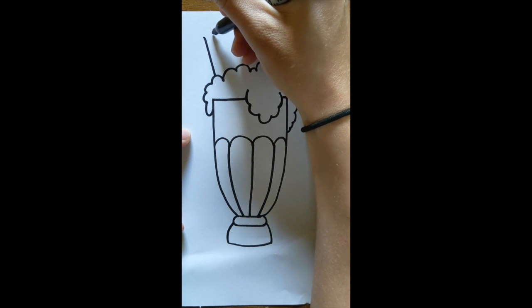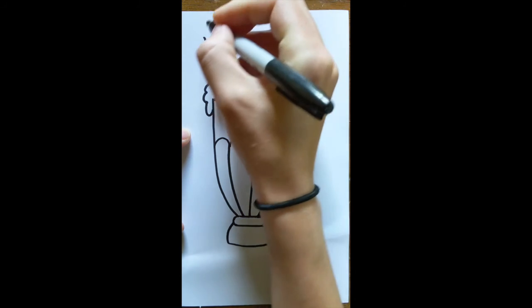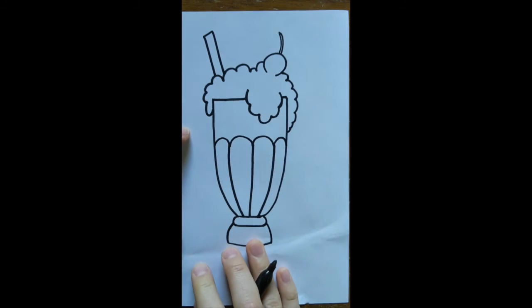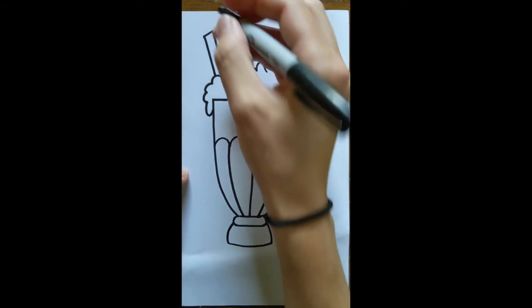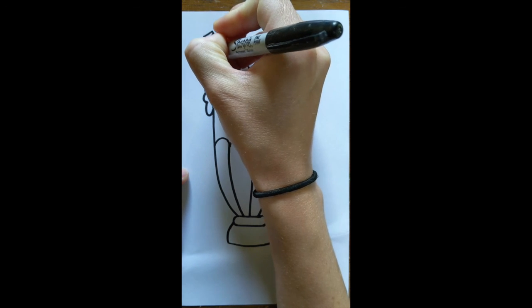Once you have that, you can add some details on your straw. I'm just going to add lines so I can make it a striped straw. One of those paper straws. Awesome.